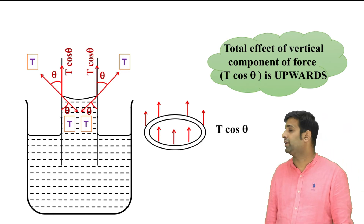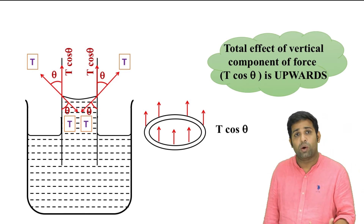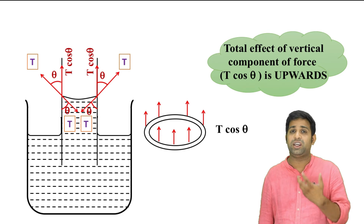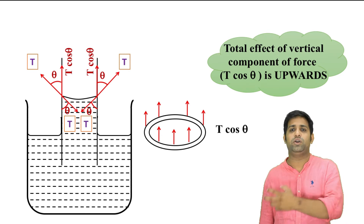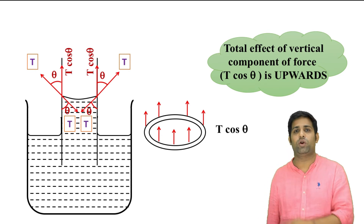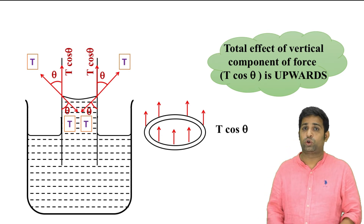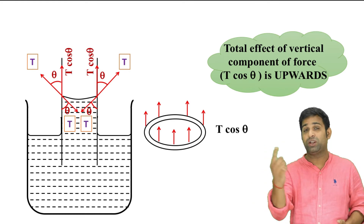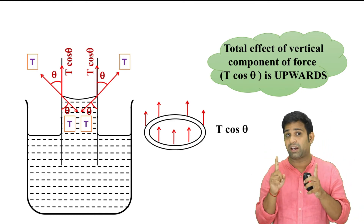The total upward force is T cos theta multiplied by 2πr, that is the total upward force acting along the whole circumference of the capillary.